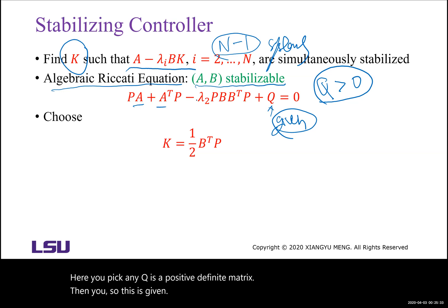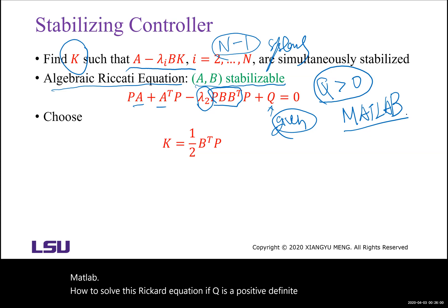A and B are given. Lambda 2 is the smallest eigenvalue from the Laplacian matrix. By solving this Riccati equation, you can find some commands in MATLAB. If Q is positive definite and A, B is stabilizable, you can always find a positive semi-definite matrix P. Then you can parameterize the gain by half B transpose P.